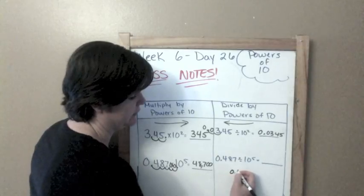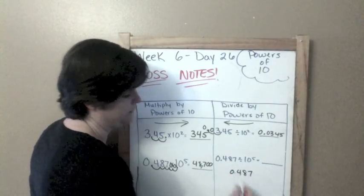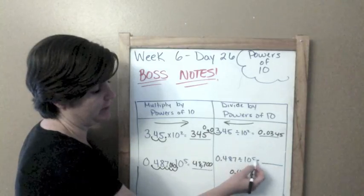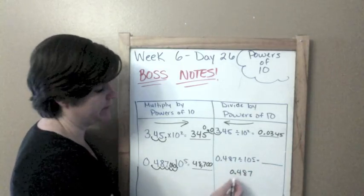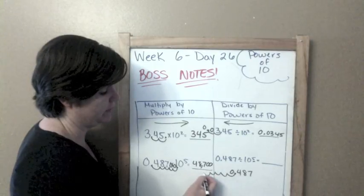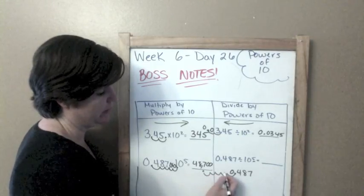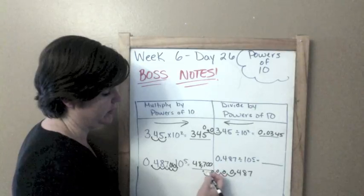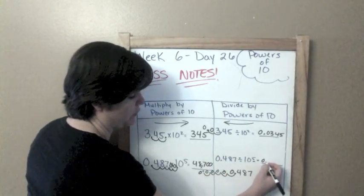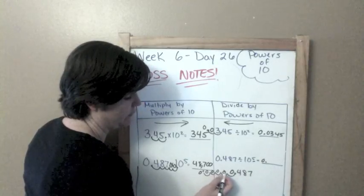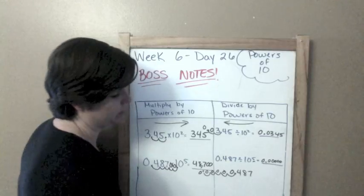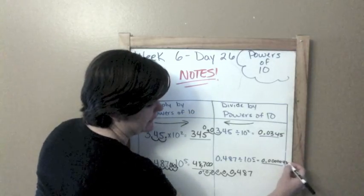If we're dividing here, this is actually going to be really big. I'm going to move five hops because I've got an exponent of five: one, two, three, four, five. Put my decimal and put zeros to hold these spaces. So 0.00000487.